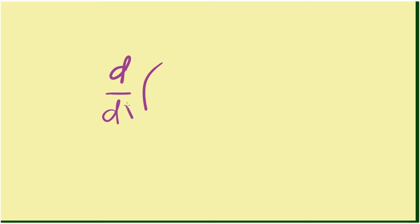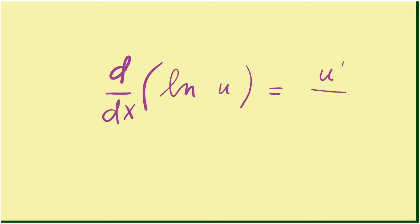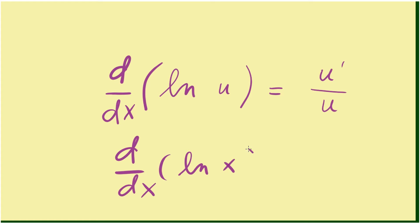Say we have to find the derivative of natural log of u, where u is a function of x — in other words, u represents some x terms. To get the derivative of natural log of u, we get the derivative of u divided by that same u. For example, the derivative of natural log of x: the derivative of x is 1, divided by x. So the derivative of natural log of x is 1 over x.